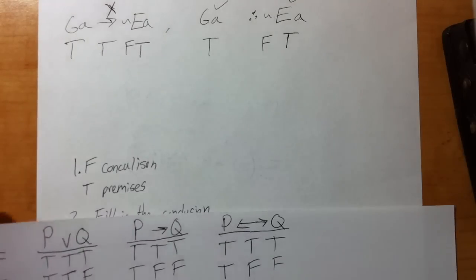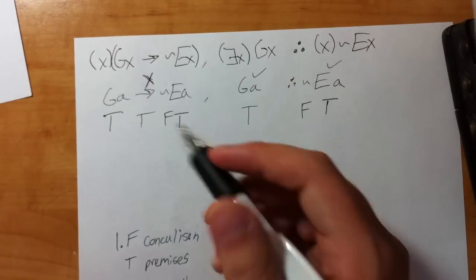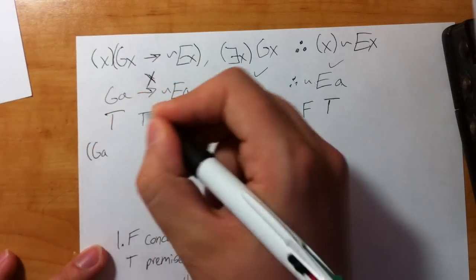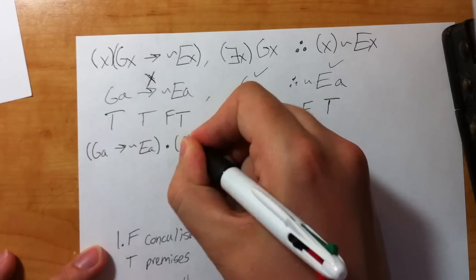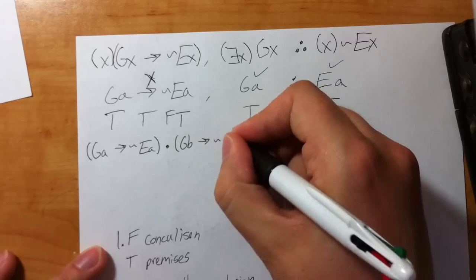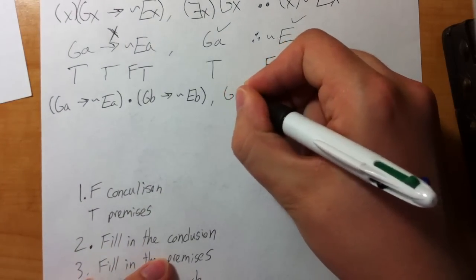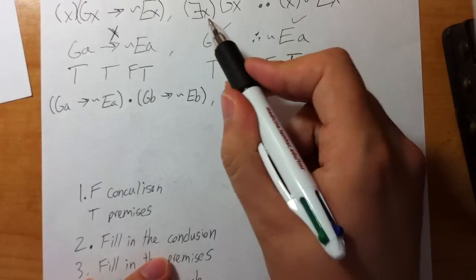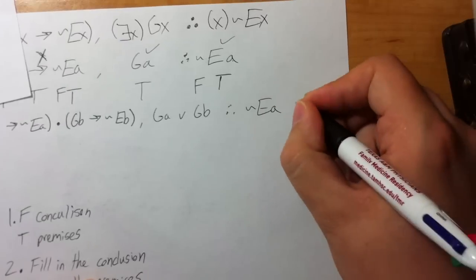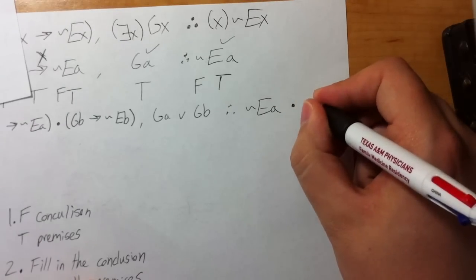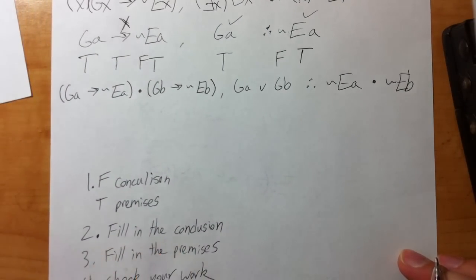For the two-element expansion, the first premise becomes: GA arrow tilde EA dot GB arrow tilde EB. The second premise expands to GA wedge GB. The conclusion becomes tilde EA dot tilde EB. Now we do the exact same four-step process all over again.